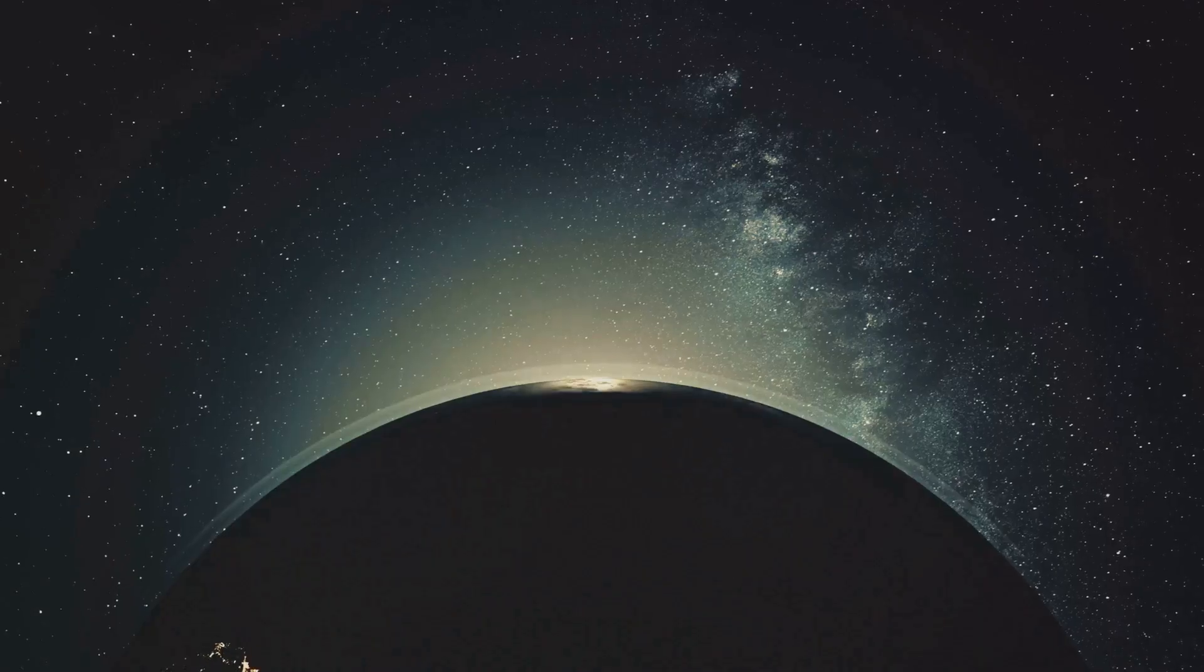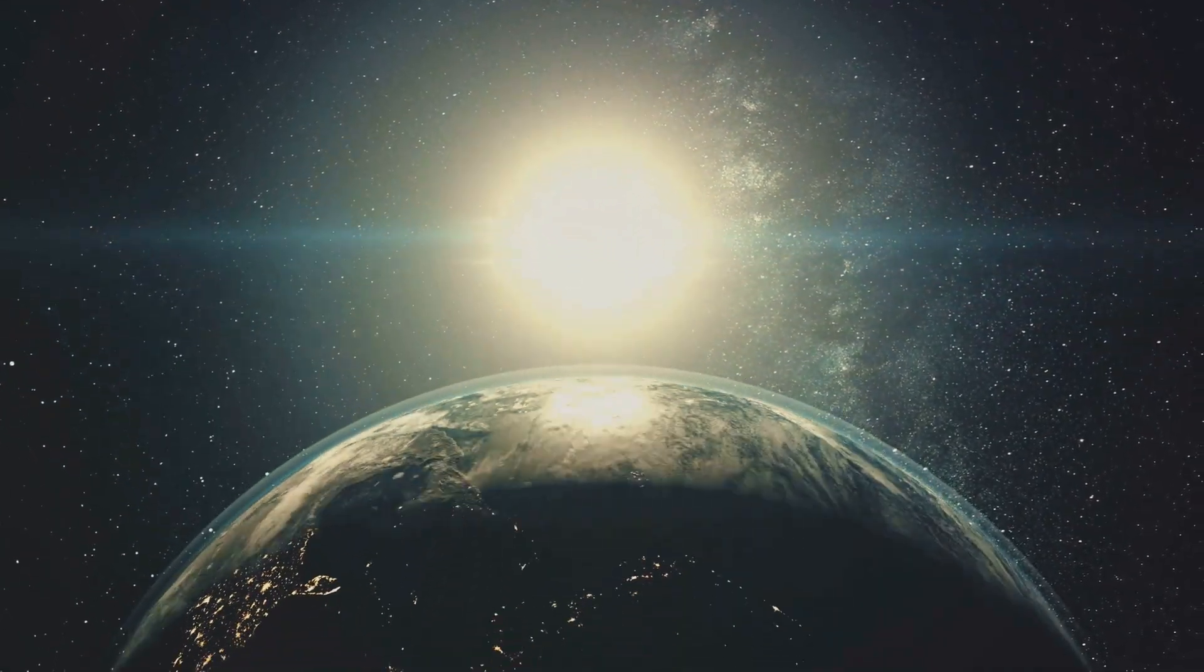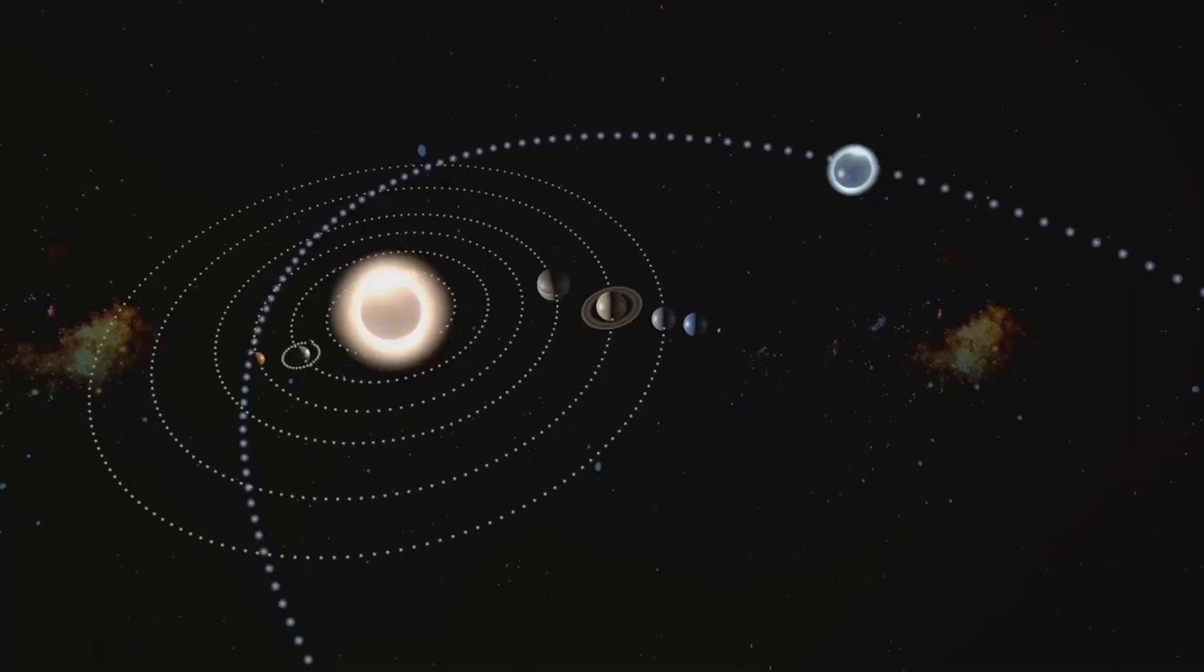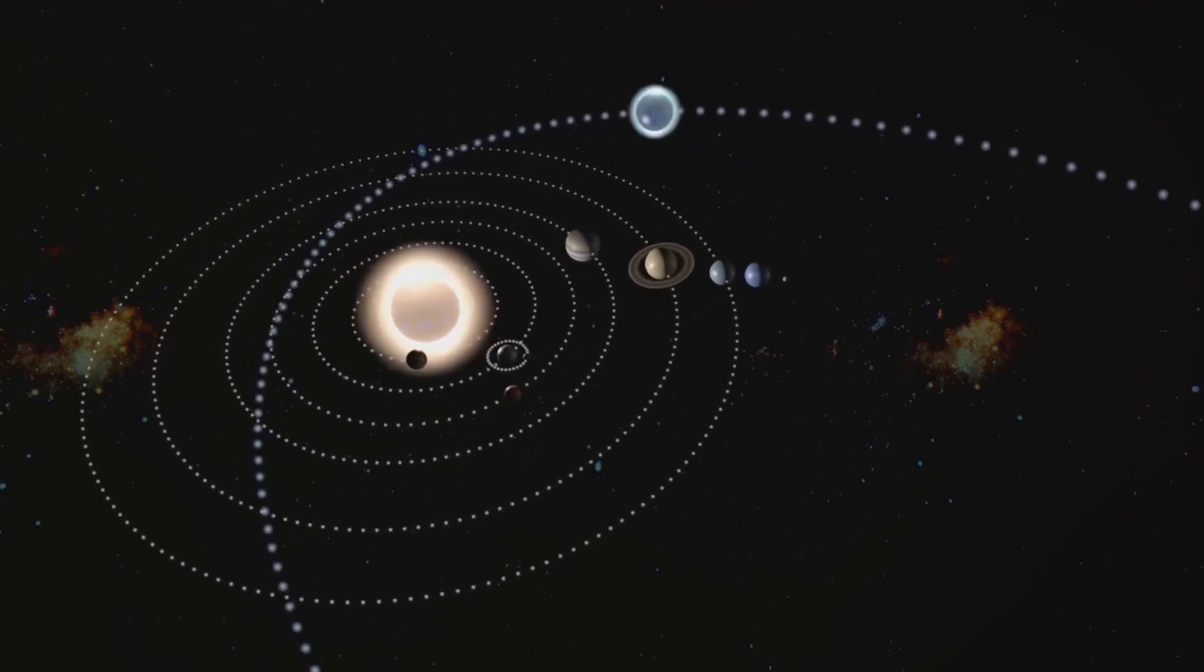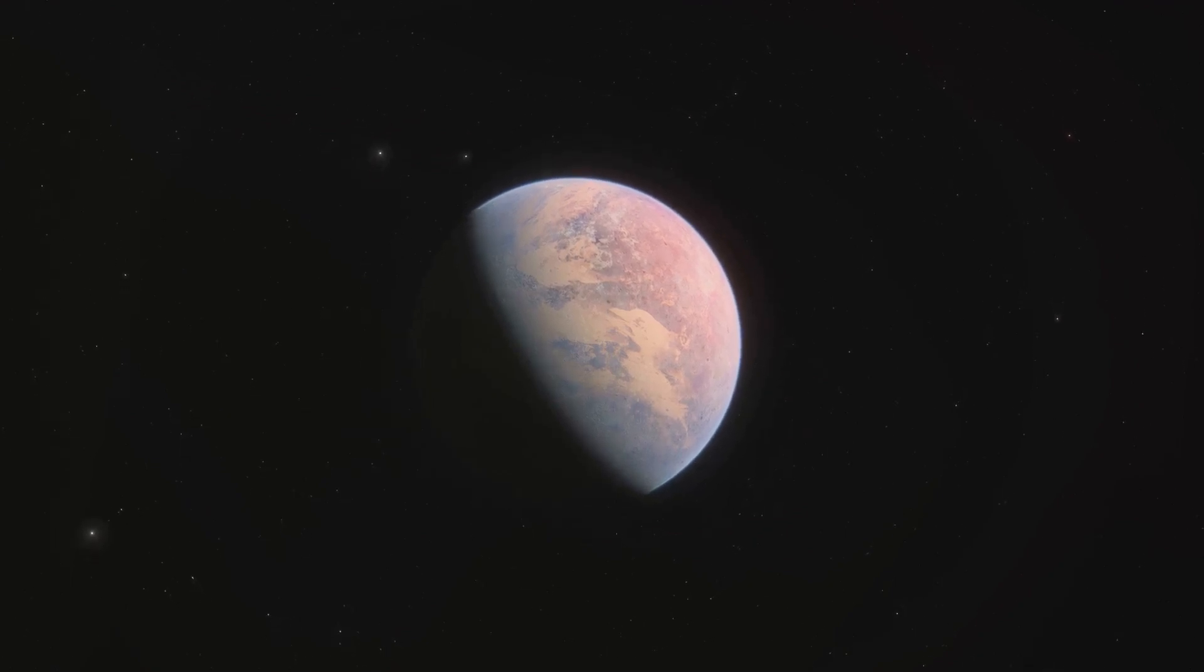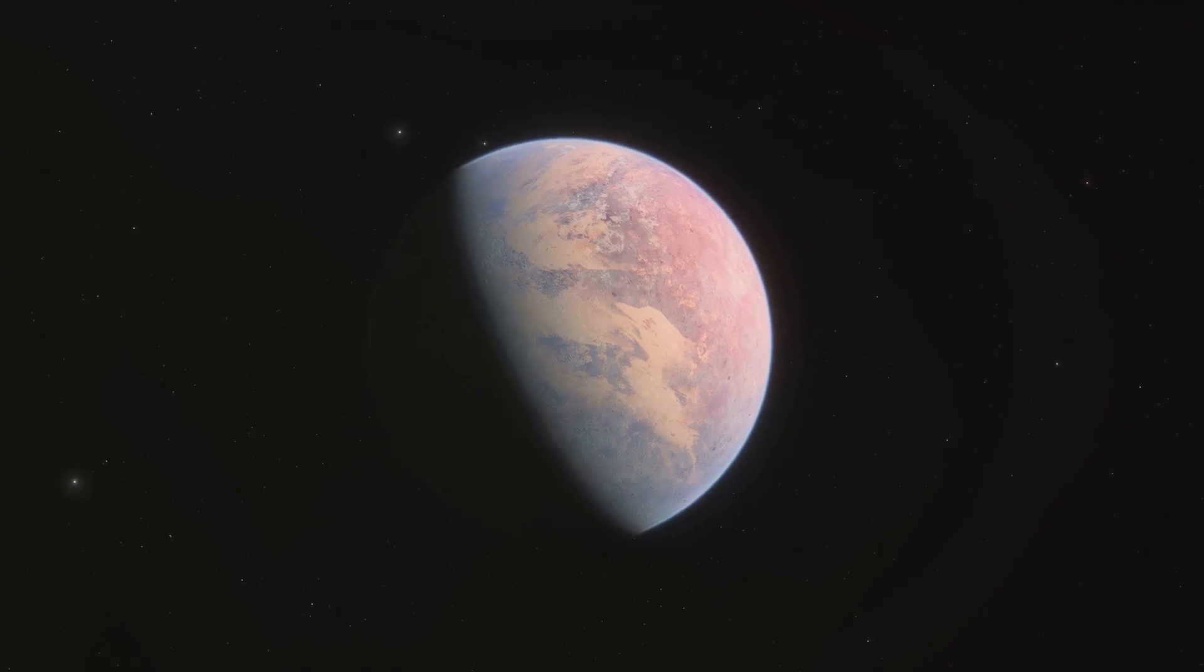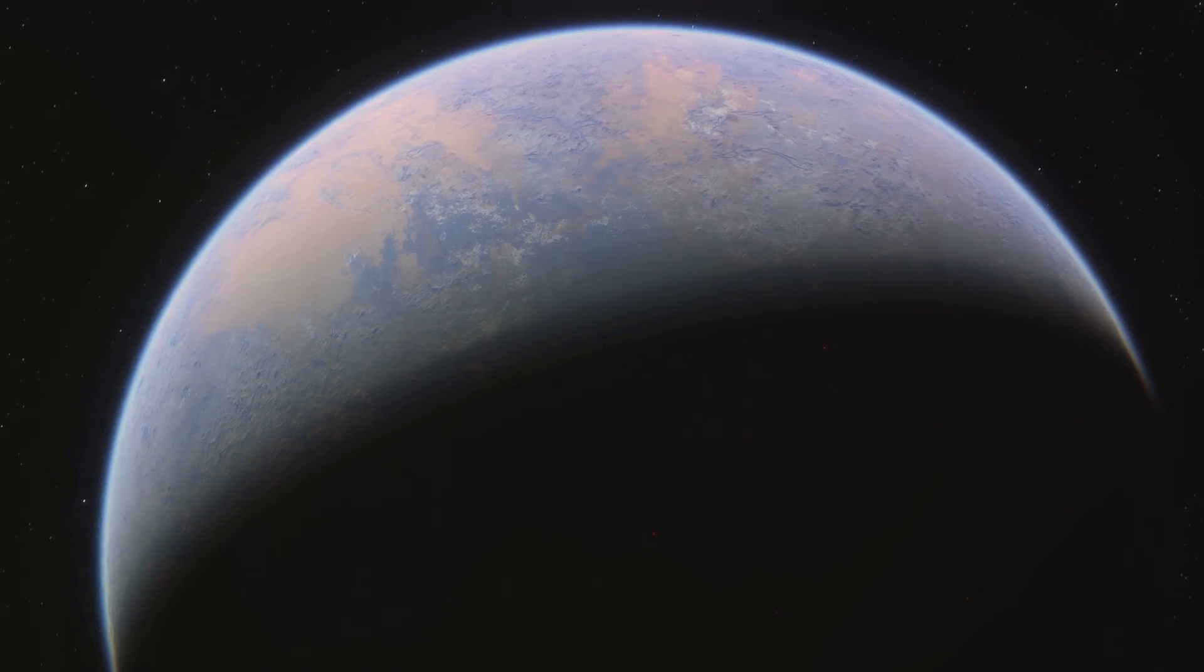But how do we find these distant planets? Well, we use a few different methods, one of which is the transit method. When a planet passes in front of its star, it causes a tiny dip in the star's brightness. By observing these dips, we can infer the presence of a planet. Yet, the burning question remains: could any of these alien worlds be suitable for life as we know it? To answer, scientists scrutinize exoplanets for their habitability. Factors such as their distance from their star, their atmospheric composition, and whether they have liquid water are all critical.